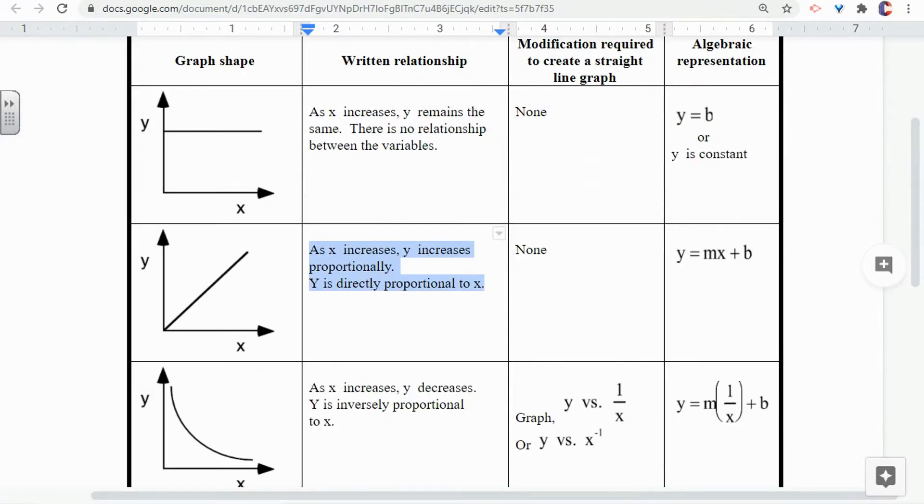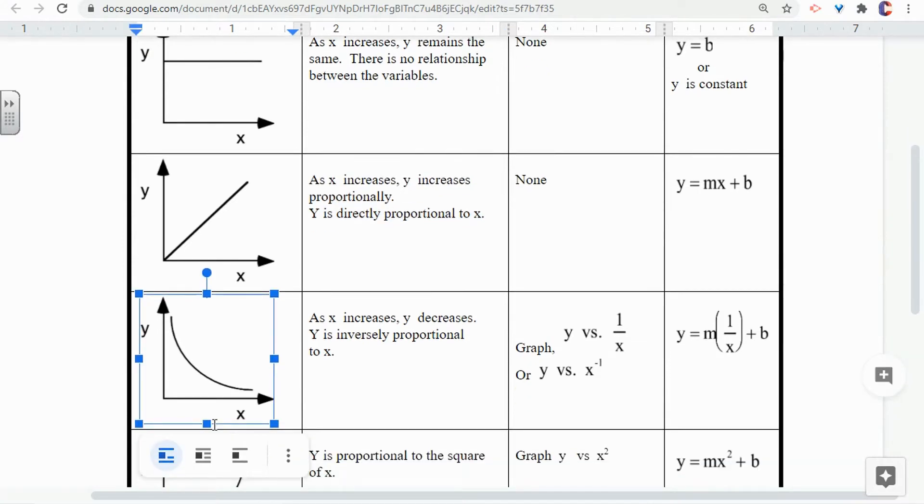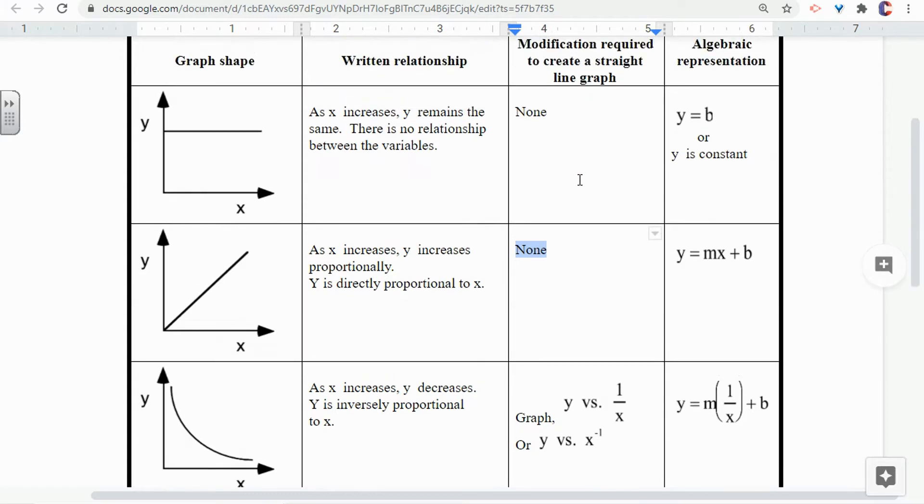because that was the graph that we had here. And for this graph, we can see that as X increases, Y decreases. So as mass increased, acceleration decreased. And this one shows that we have a straight line graph, so we don't have to do any modifications to create a straight line graph.